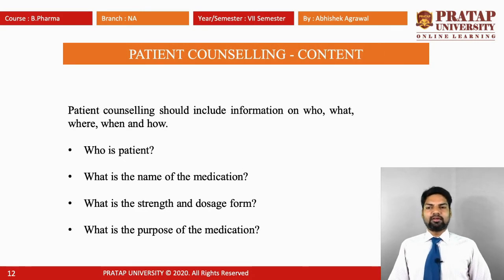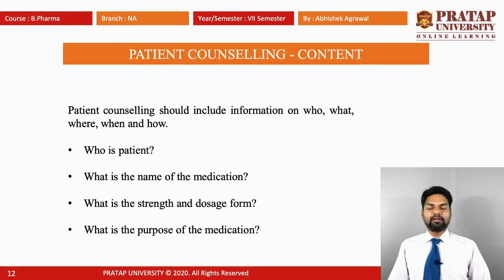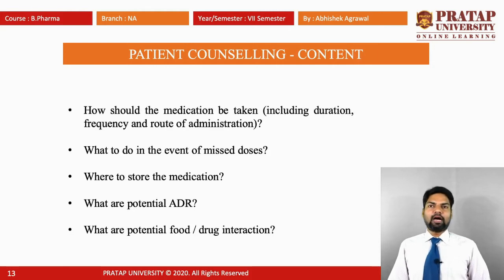The content of patient counseling should include information on who, what, where, when and how. This covers: who is the patient — male or female; what is the name of the drug; what is the strength and dosage form; what is the purpose of the medication; and how the medication should be taken — the route of administration, duration, and frequency.